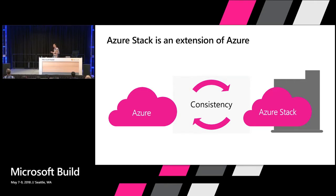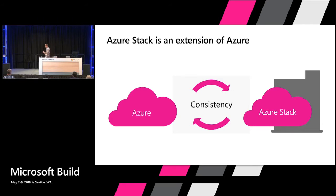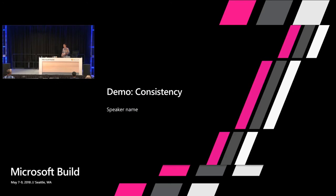Consistency is the foundation for creating hybrid apps. When you have a level of consistency between different clouds, you can create applications where part of your data resides on-prem with Azure Stack, and for scale you use Azure. It enables scenarios like AI at the edge, where you train your models at scale in the public cloud and then score those models in the location where the action happens with Azure Stack.